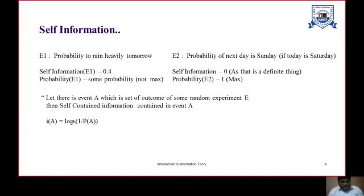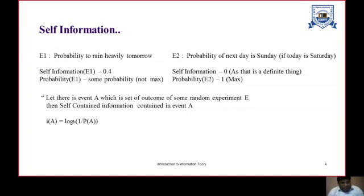Let there be an event A, which is the set of outcomes of some random experiment E. The self-contained information is contained in event A. We can represent the self-information with I. So I(A), where A is an event, equals log base B of one divided by the probability of happening A.